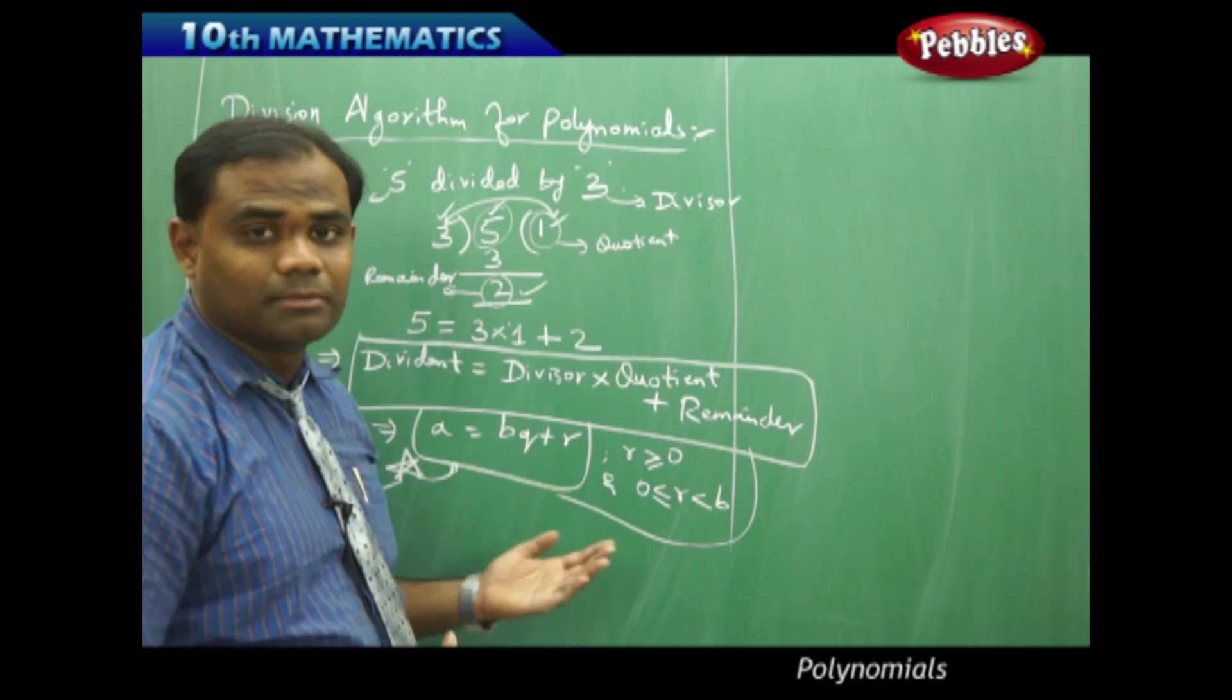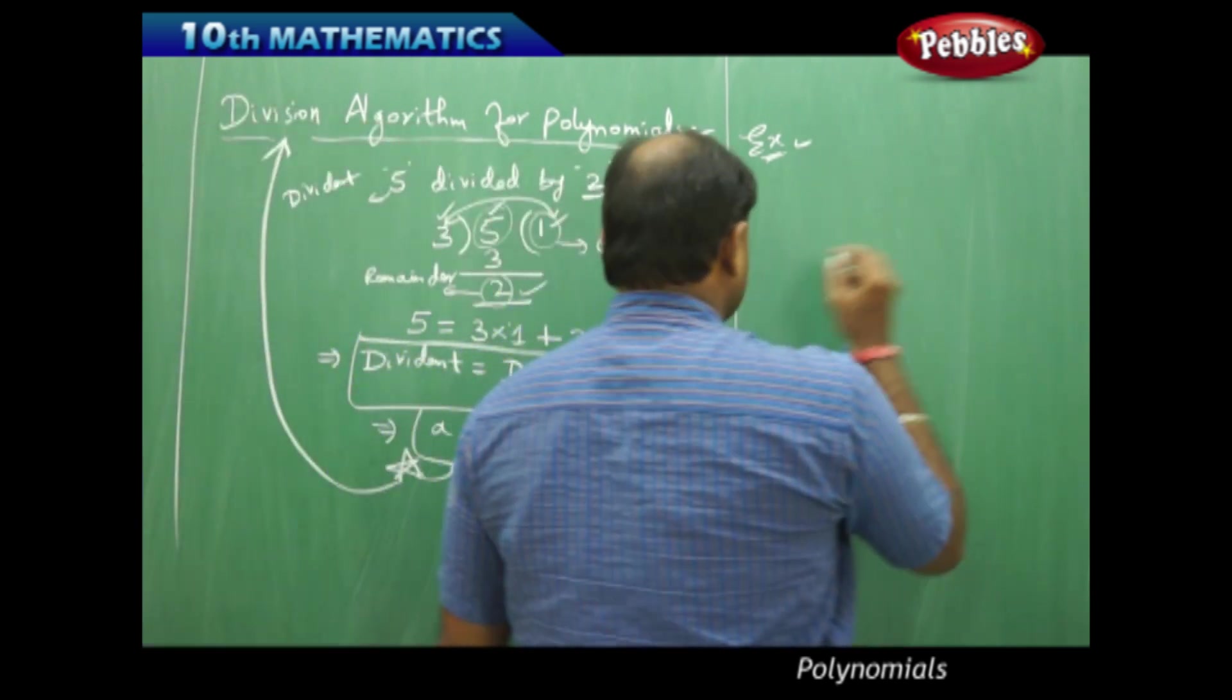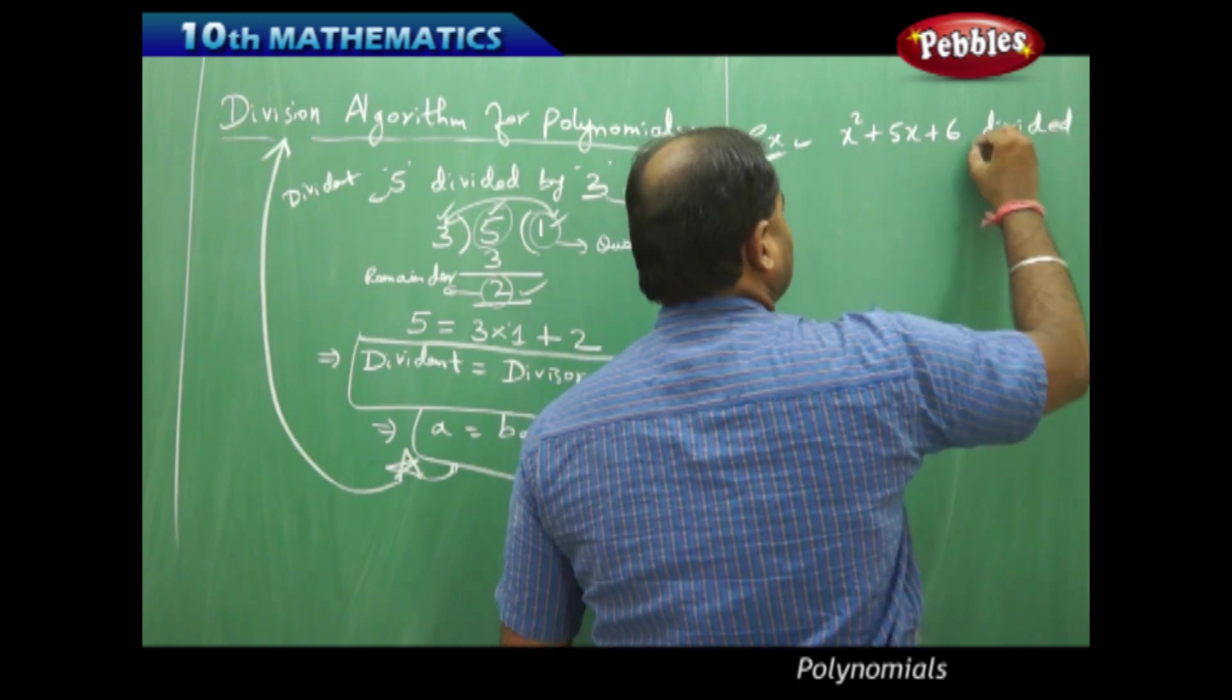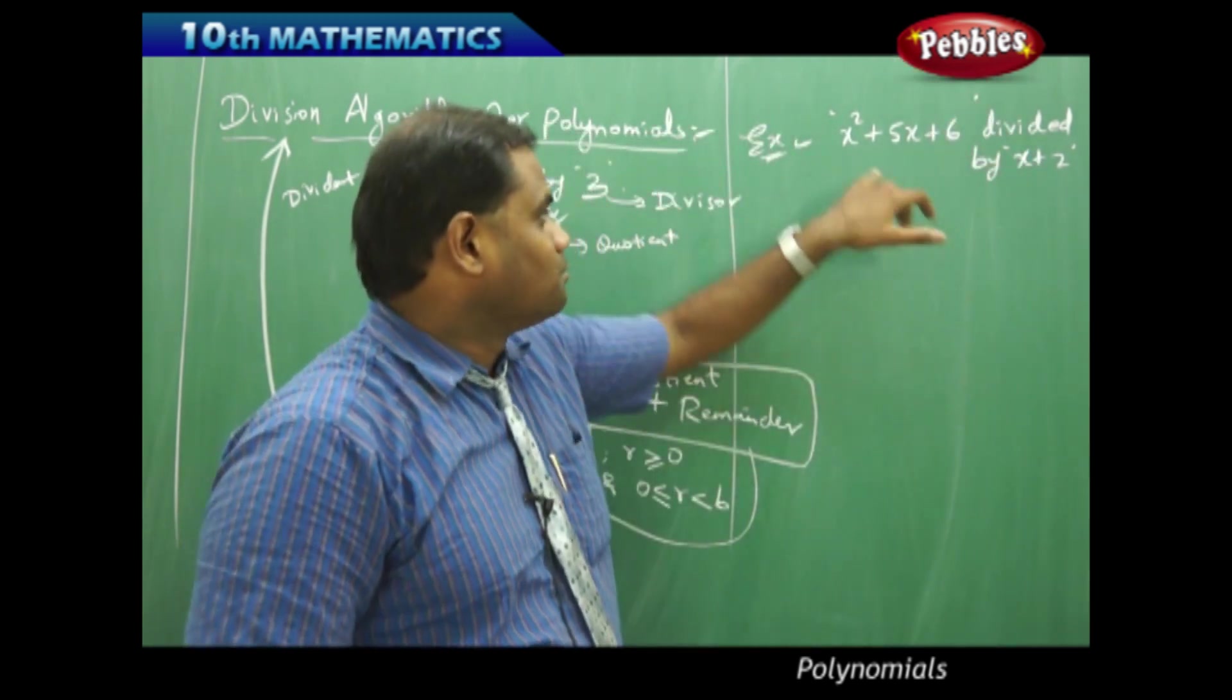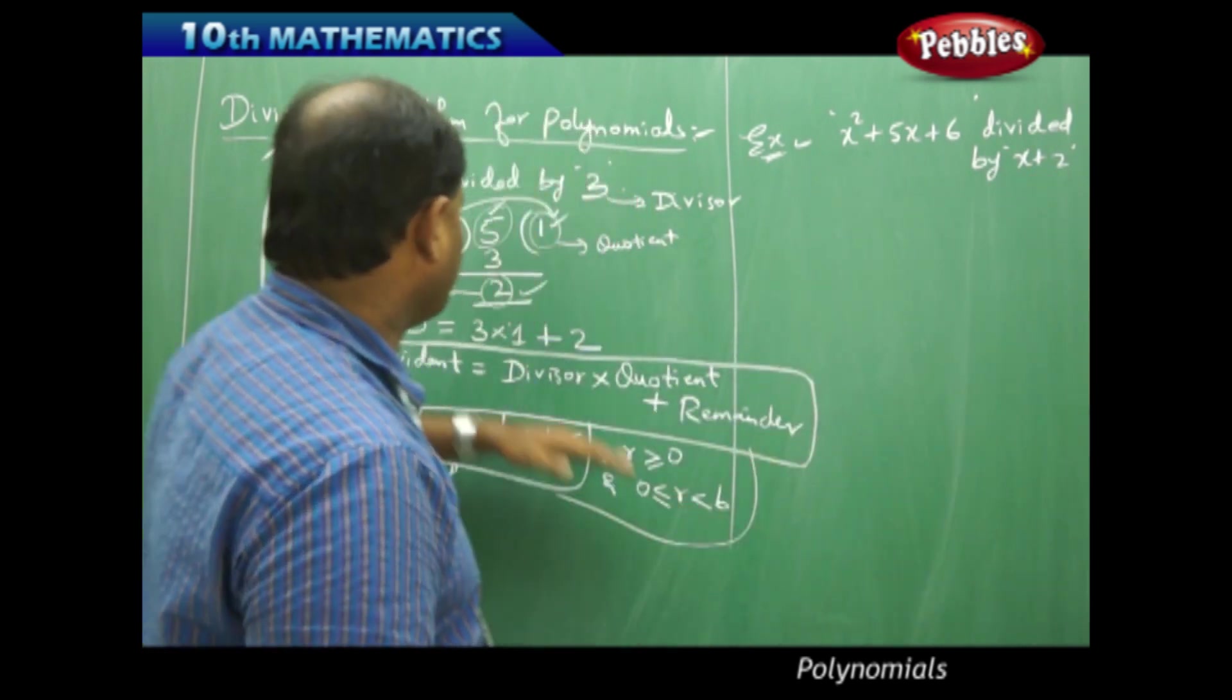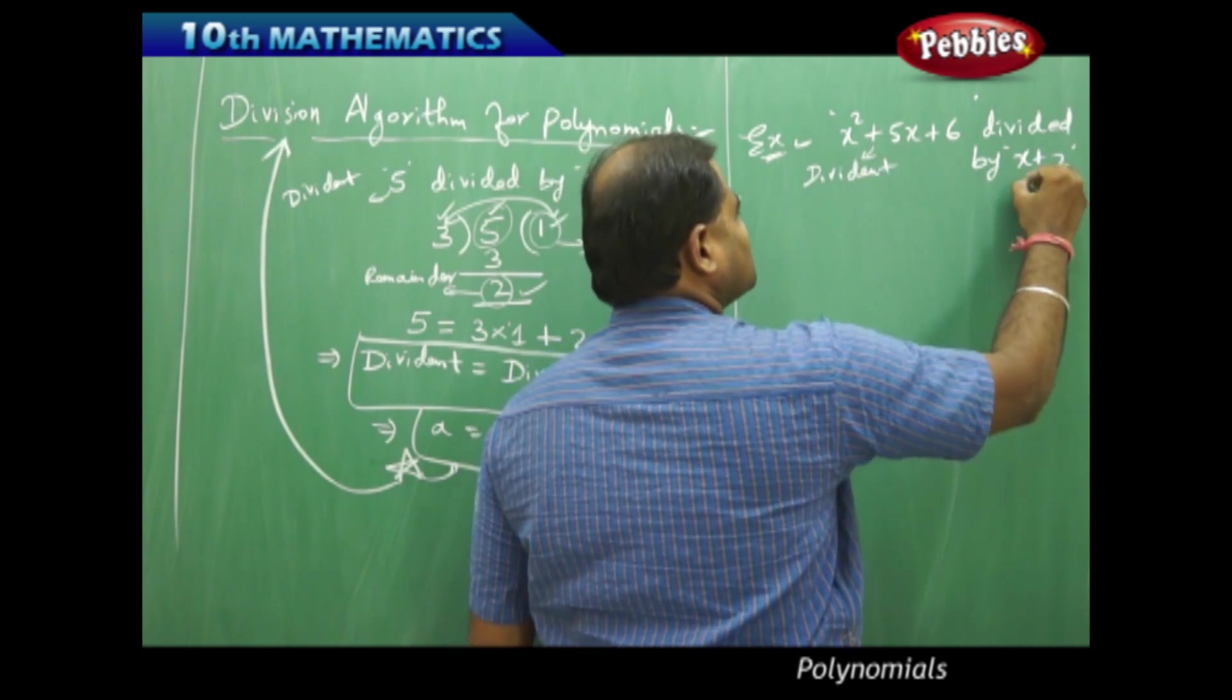Let's see if this similar division algorithm applies even for polynomials. As I have taken 5 divided by 3, let me take x squared plus 5x plus 6 divided by x plus 2. Now I am dividing x plus 2 into this quadratic polynomial x squared plus 5x plus 6. Clearly this is the dividend and this is the divisor polynomial, as you compare with 5 and 3. Therefore this is the dividend and this is the divisor.